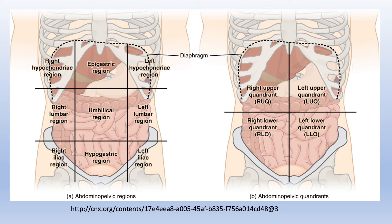When we look to the right and left side of this middle column, we start with right or left when describing these regions. If it is just below the ribs, then we call them right or left hypochondriac regions. On the lateral side of the body in the middle row, we call them right or left lumbar regions. Some authors use right and left lateral regions instead of lumbar region.